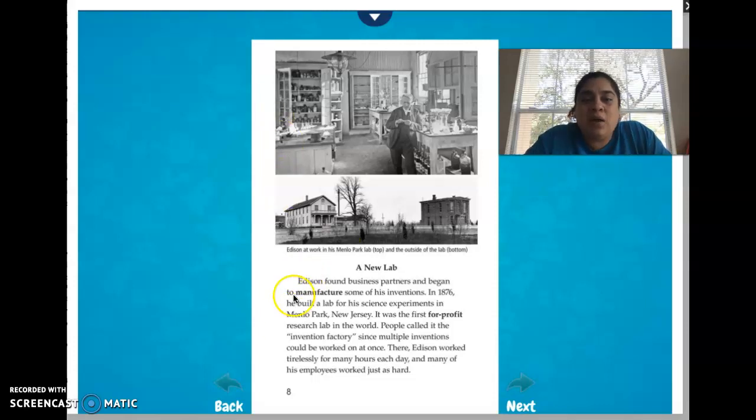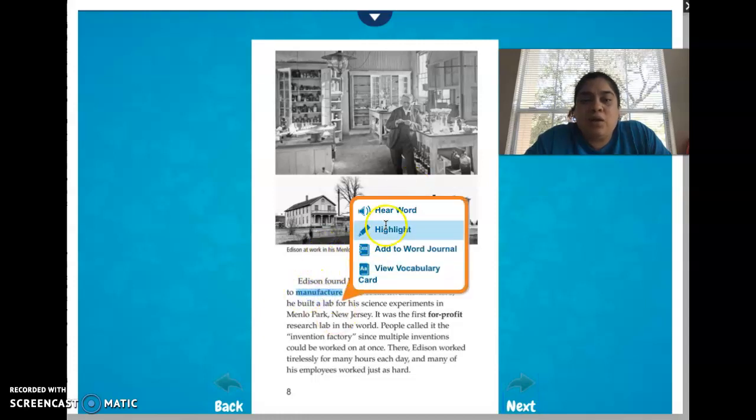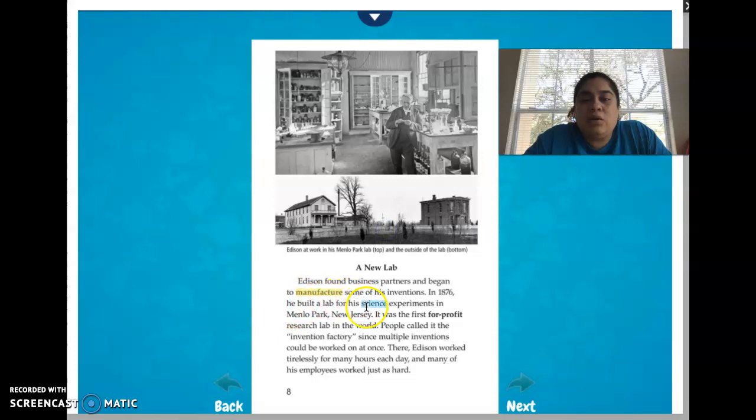So Thomas Edison found business partners to help him manufacture some of his inventions and there is that word manufacturers. Manufacturer means that these people provided him money so that he could do experiments all day.